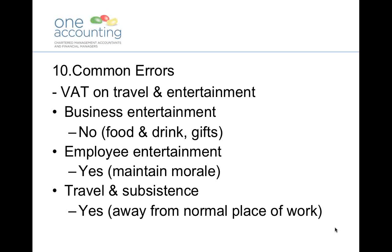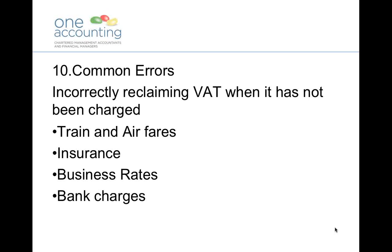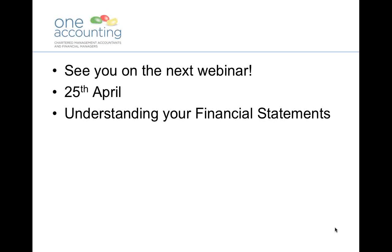For travel and subsistence — say one of your employees has to go to London on business and needs to pay for a hotel and meals — you can reclaim the VAT on these items because they're away from the normal place of work. Another common error is where VAT has been incorrectly reclaimed when it hasn't actually been charged — this could be a simple case of pressing the wrong button on your accounting software. Typical things we see include airfares and train fares, business insurance and rates, and bank charges. These items are either zero-rated or exempt, so no VAT has been charged in the first place and there's nothing for you to reclaim.